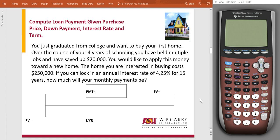So the home you're interested in buying costs $250,000. If you can lock in an annual interest rate of 4.25% for 15 years, how much will your monthly payments be?